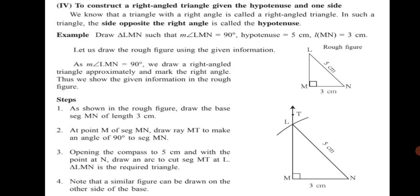Let's have a look at an example. Draw triangle LMN such that angle LMN is equal to 90 degrees, hypotenuse is equal to 5 cm, and length MN is equal to 3 cm.